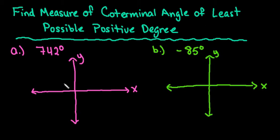Hi, for this video I want to show you how to find the measure of a coterminal angle of least possible positive degree for the given angles. Some of these angles that I'm given are positive and some are negative. I'm going to do three total examples and it's always good to draw out a picture to help you figure out where you're starting and then figure out what is the least possible positive degree angle that can be formed.